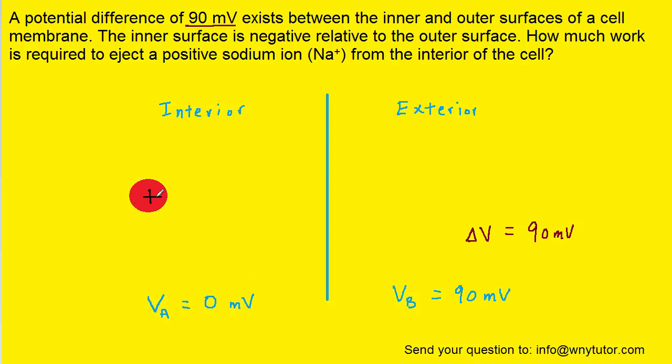Now ordinarily a positive charge would not move spontaneously from a lower potential to a higher potential. That would be like asking a ball to roll up a hill. It just doesn't happen spontaneously.